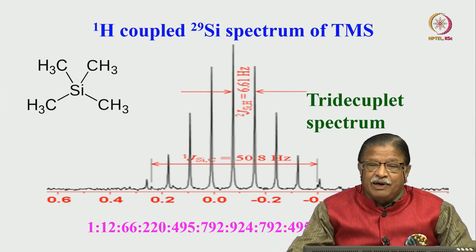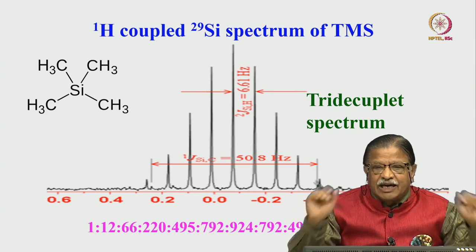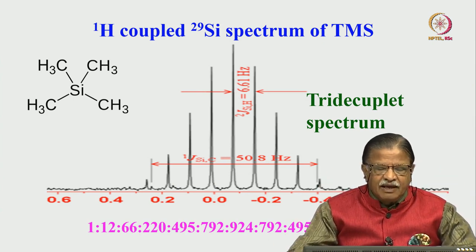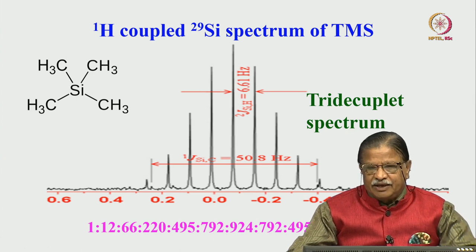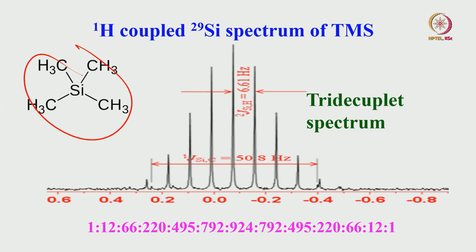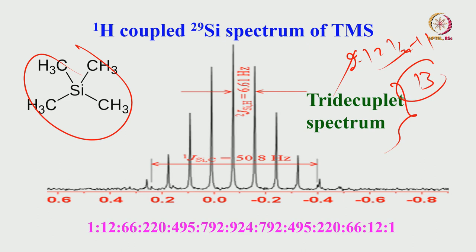For the proton-coupled silicon NMR of TMS, with no decoupling, we apply the 2NI + 1 rule. There are 12 equivalent protons, so 2 × 12 × (1/2) + 1 = 13 peaks. This is called a tridecaplet spectrum — 13 peaks. You can count them in the spectrum. Of course, you also see the carbon-13 satellites whose separation we already measured in the decoupled case. The 13-peak separation of adjacent lines gives you the two-bond silicon-proton coupling.